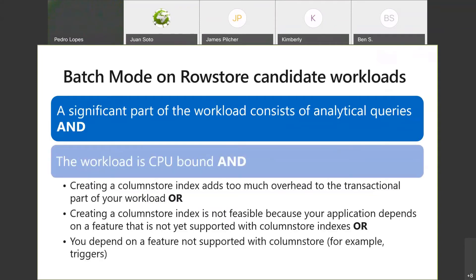What we've done is unlock the analytical processing benefits of batch mode without having column store indexes. You can now run batch mode operations on row store — supported on heaps and B-tree indexes. We're not introducing new batch-capable operators; the same ones that used to work on column store now work on row store indexes. Not all queries on row store will be eligible for batch mode — this works well with large data sets and analytical workloads. The engine checks table size, estimated cardinalities, and whether you're doing aggregations on large data sets, and if it looks analytical in nature, it kicks in batch mode.